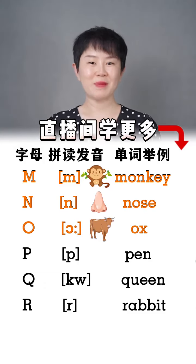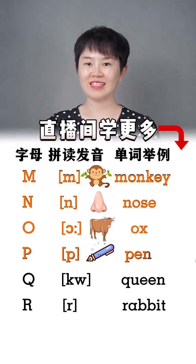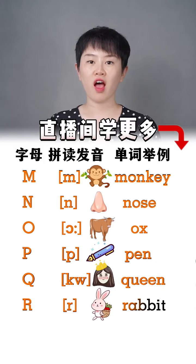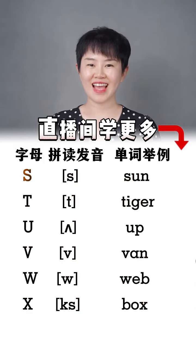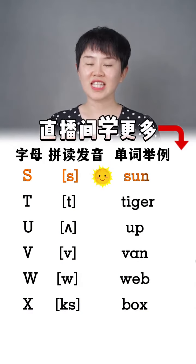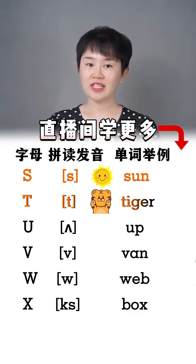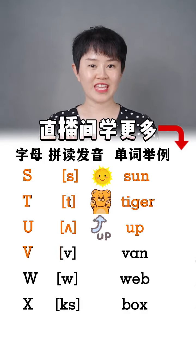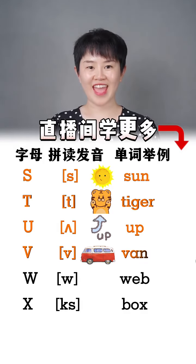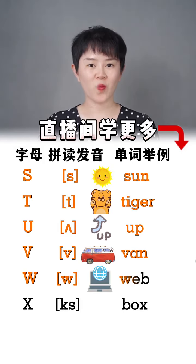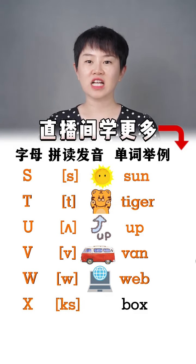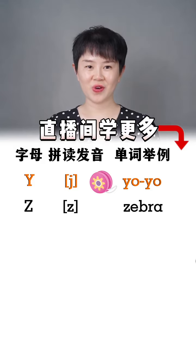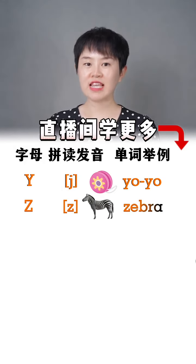p p pin, q q queen, r r rabbit, s s sun, t t tiger, u up up, v v van, w web, x x box, y y yo yo, z z zebra.